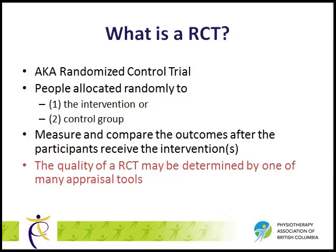Let's review the different types of research studies. The randomized control trial, or RCT, is a very high level of evidence. It is distinguished from other types of studies because participants, who are very similar at baseline, are allocated randomly to one of two groups. While one group receives the standardized intervention, the other group, the control group, doesn't receive the standardized intervention — instead, they receive usual care or a placebo intervention. As we will see in part two of this tutorial, the quality of an RCT may be determined by one of many different appraisal tools.